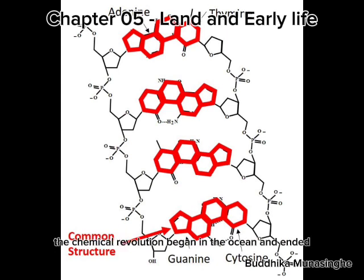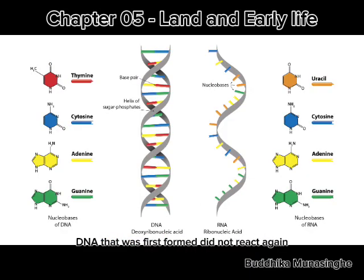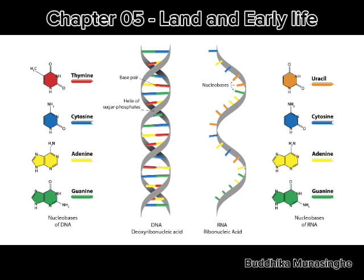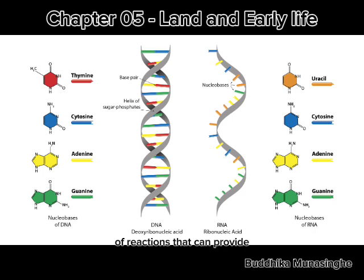The chemical revolution began in the ocean and ended. DNA that was first formed did not react again. Instead, it developed the ability to become new identical copies. This process is also joined by a series of reactions that can provide the energy needed for this process to occur efficiently.